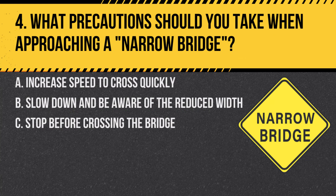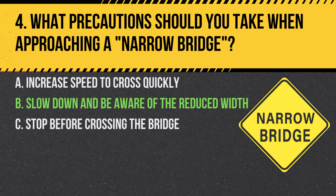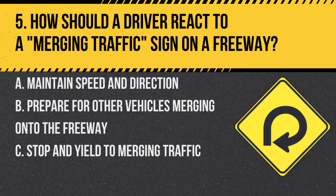Question 4. What precautions should you take when approaching a narrow bridge? A. Increase speed to cross quickly. B. Slow down and be aware of the reduced width. A narrow bridge sign warns that the bridge ahead has limited width, requiring caution.